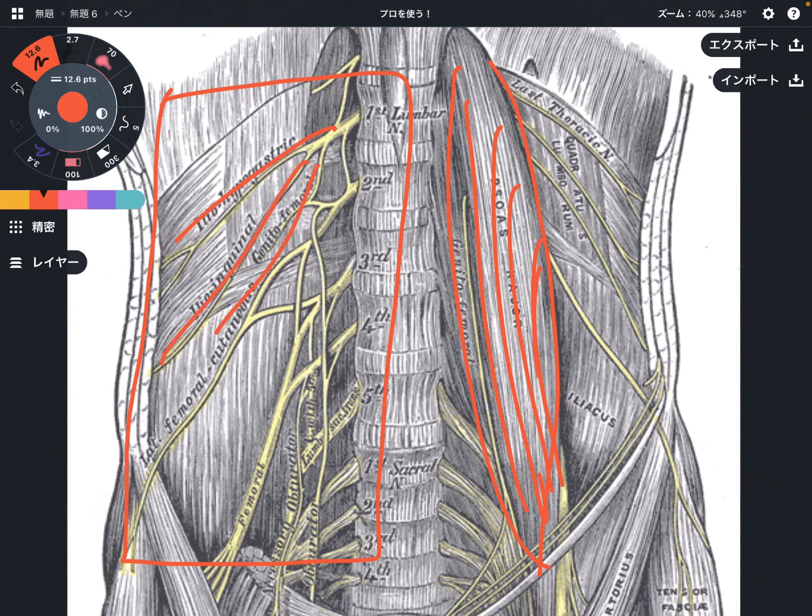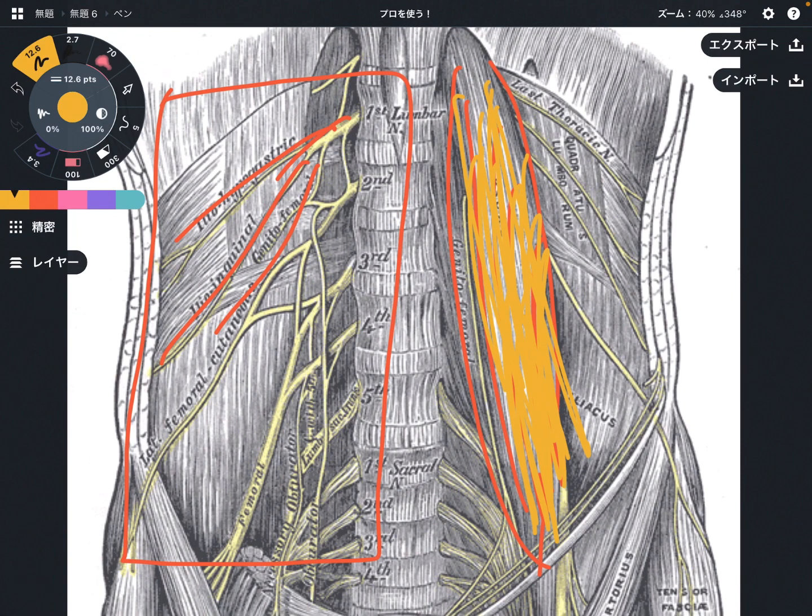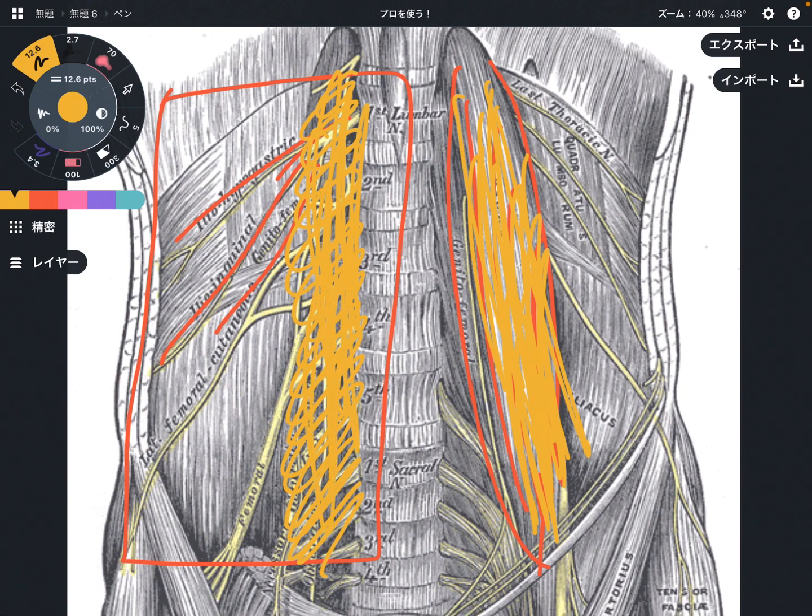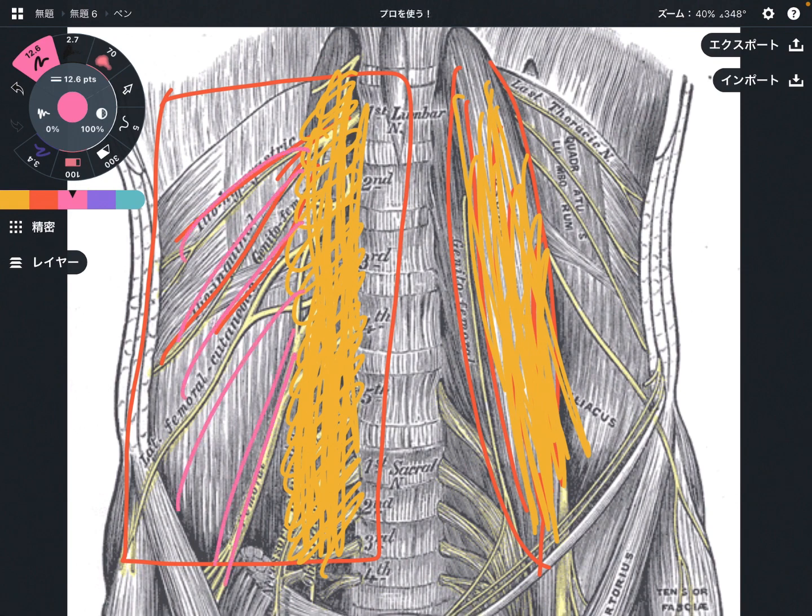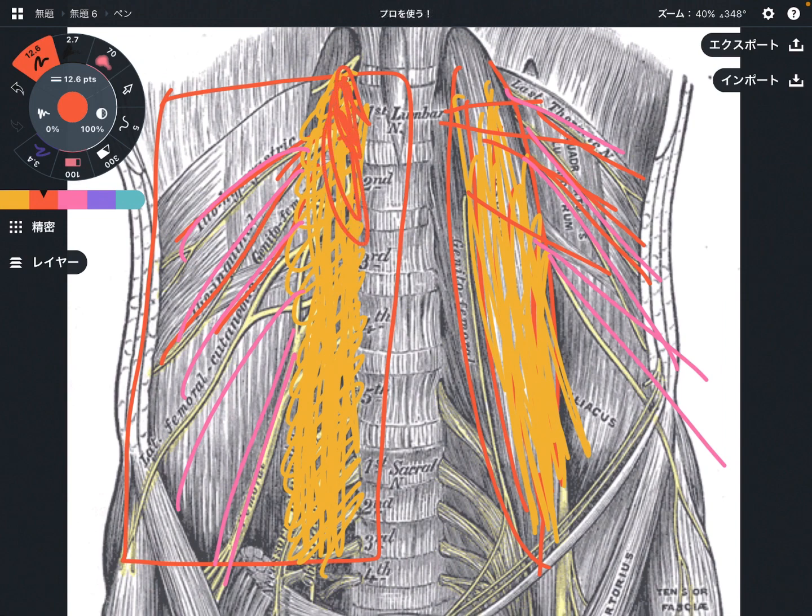Do you remember? Iliohypogastric, ilioinguinal, femoral nerve, genitofemoral. Lumbar plexus on this side. But if you look this side, the left side, you see muscles. What is this one? This guy. This is psoas. Very important core and hip muscle. So imagine psoas runs like this on the right side. Don't you notice something? The lumbar plexus appears from posterior from psoas. Because you don't see the lumbar plexus on this side on top of psoas, right? You see lumbar plexus appearing from posterior to psoas.